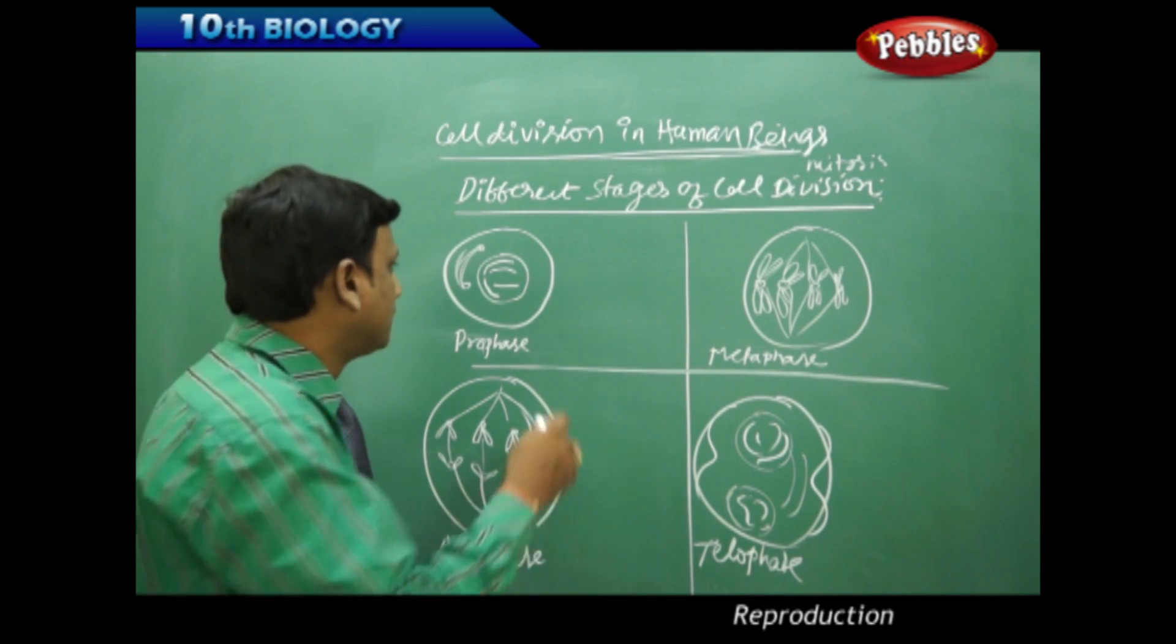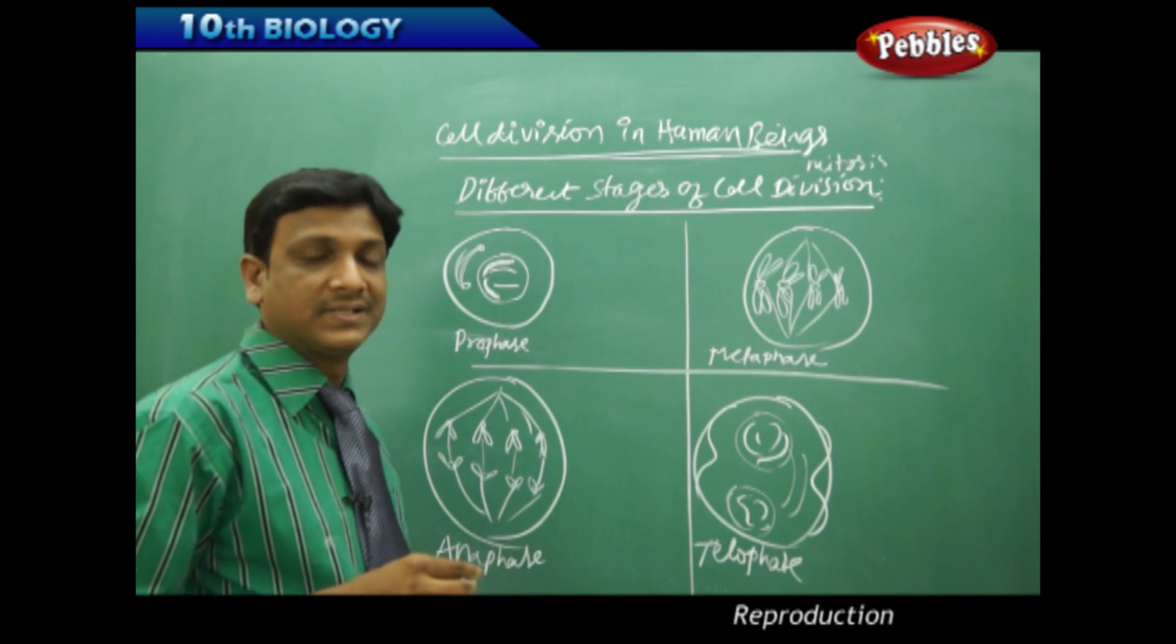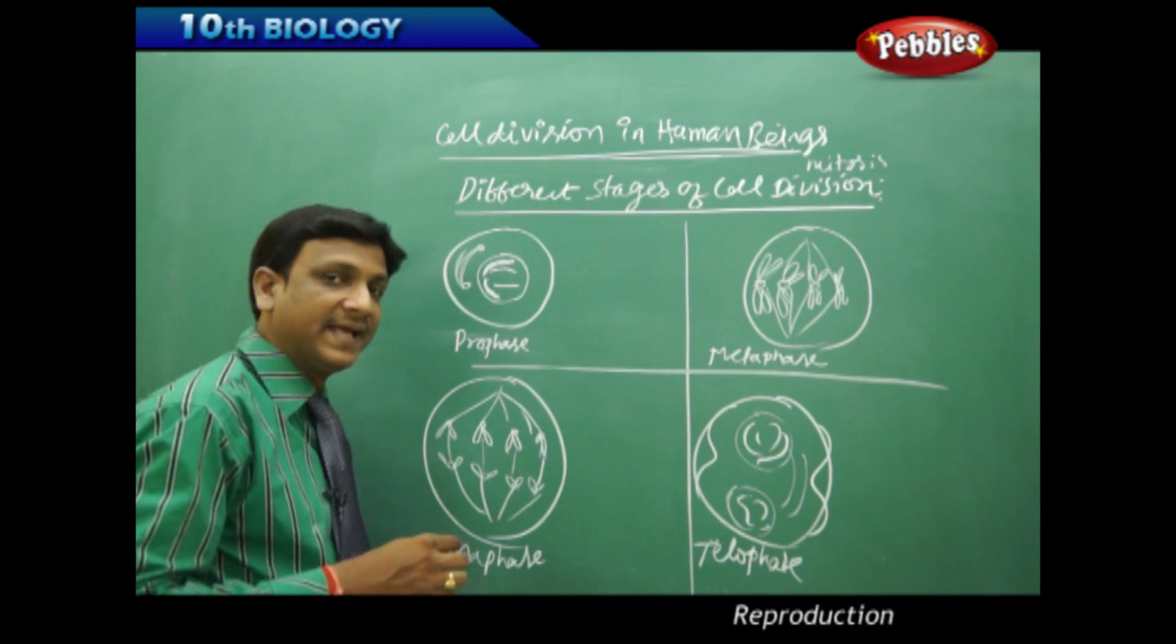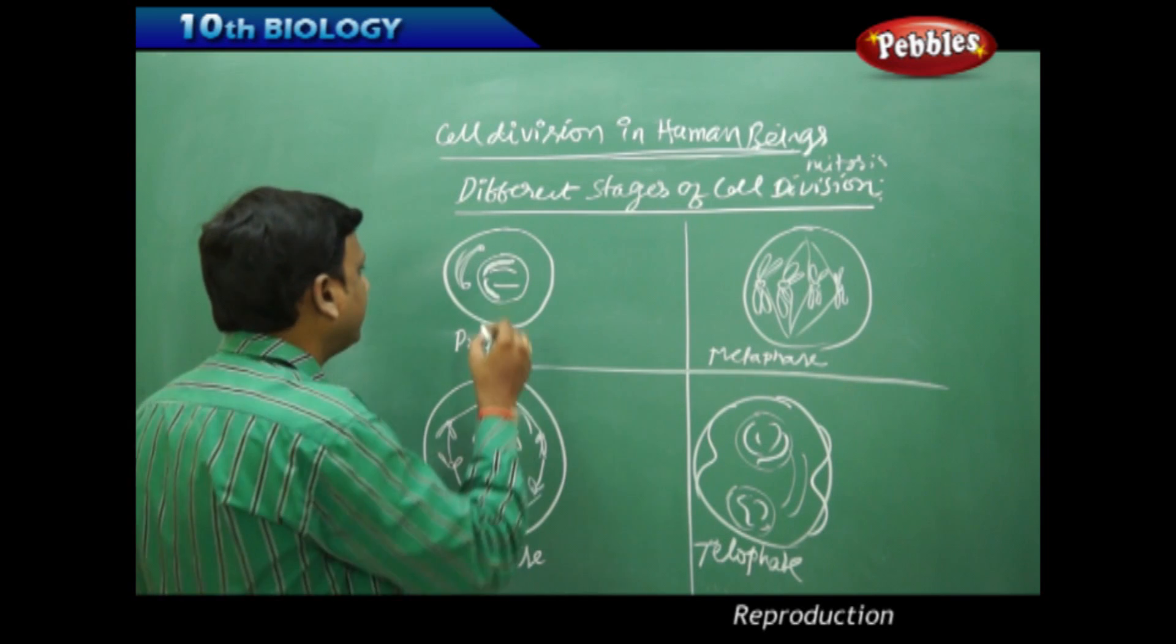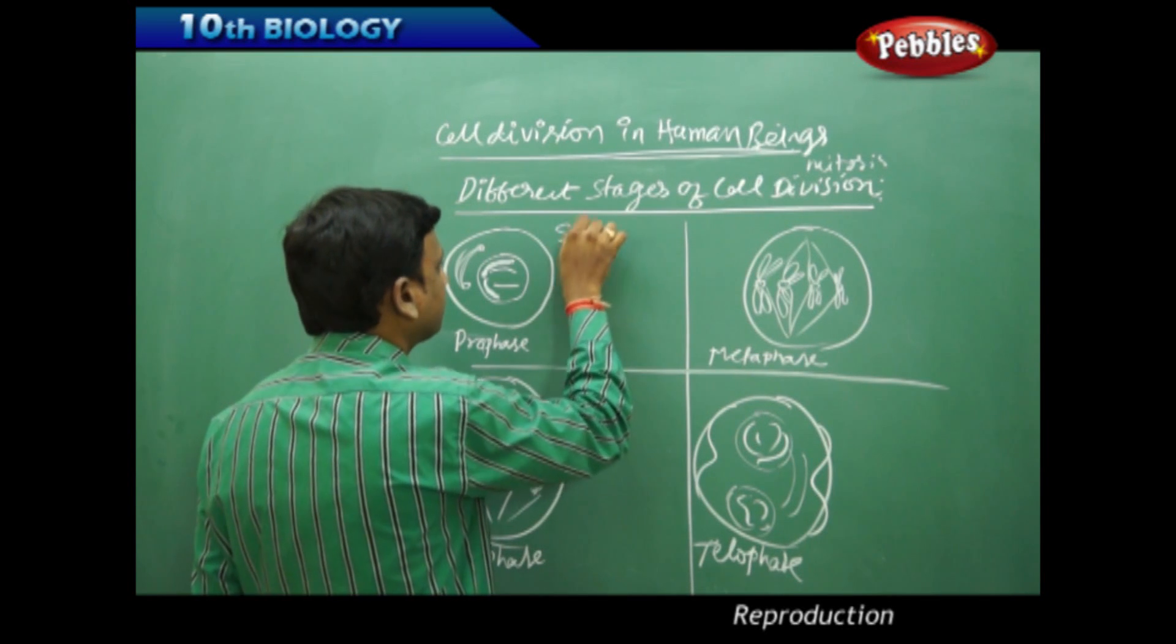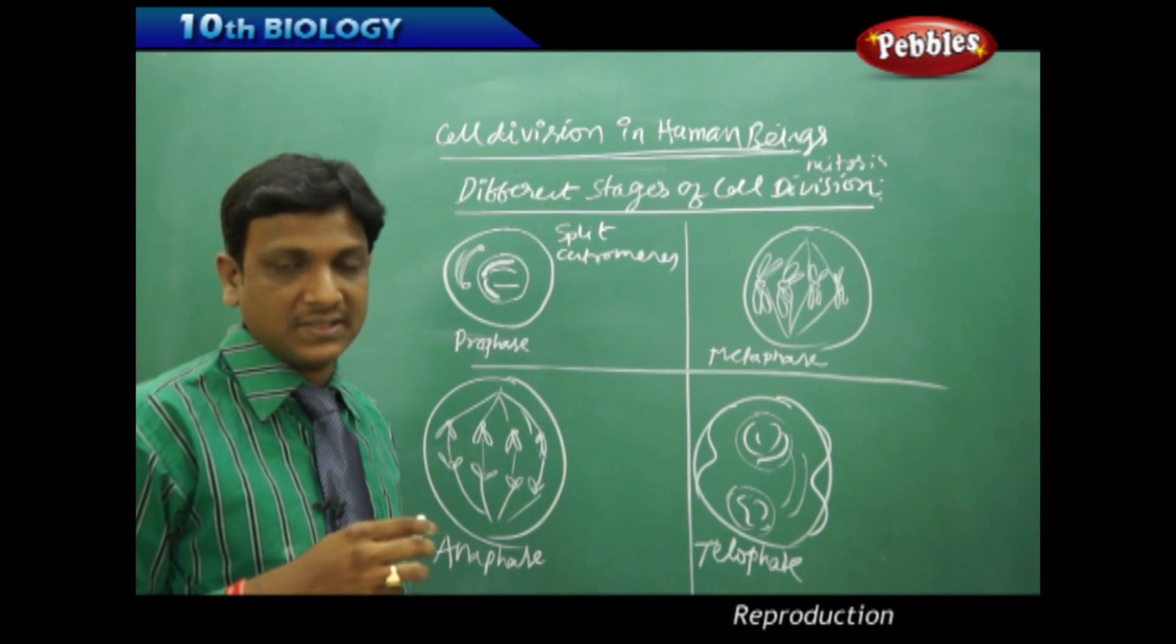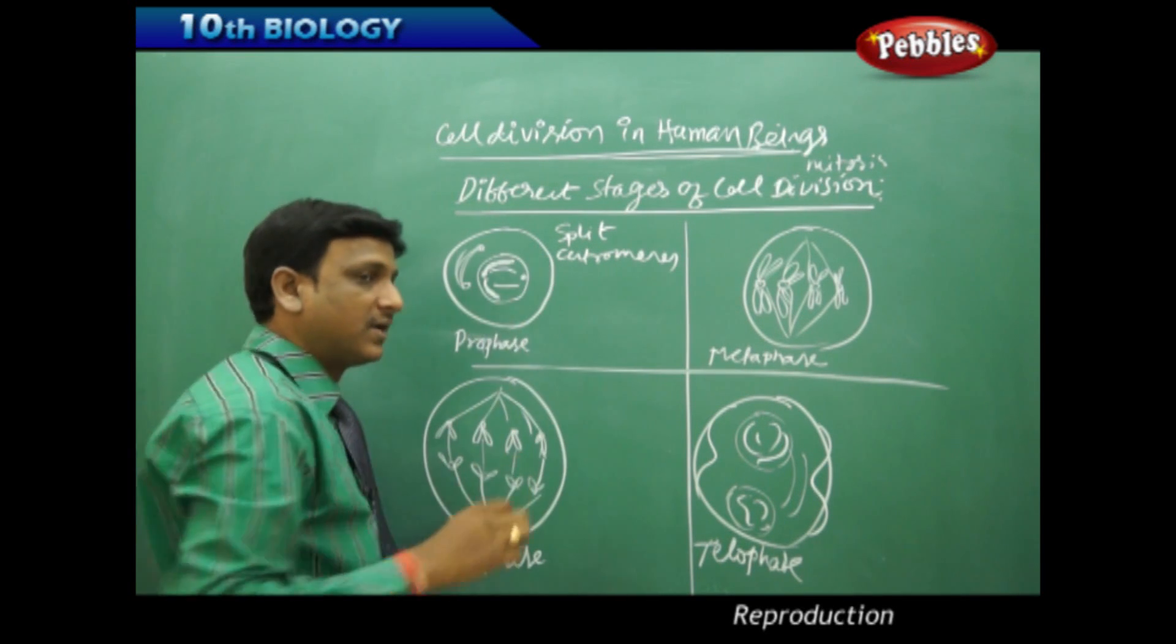The chromosomes become very clear. They are condensed and can be observed under a light microscope. They split lengthwise, so the chromosomes are separated and connected by centromeres. The nuclear membrane starts dissolving and the nucleolus becomes very small compared to the chromosomes.